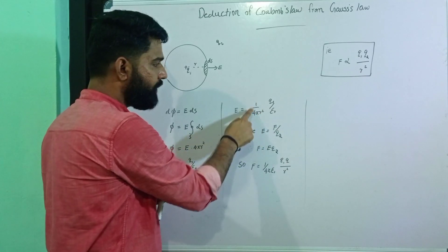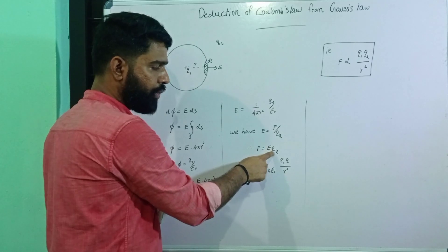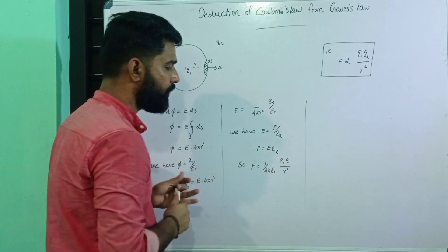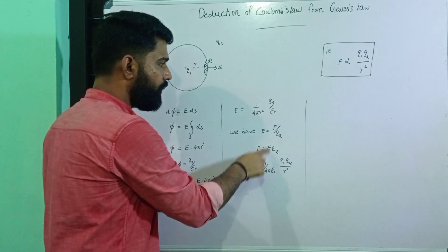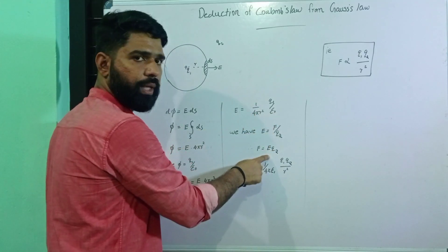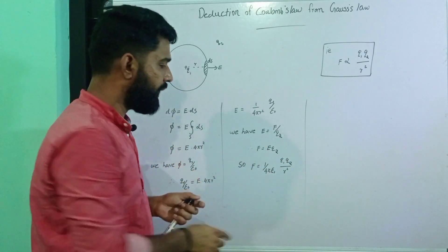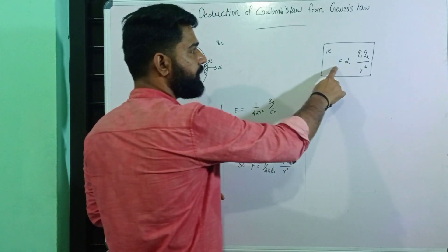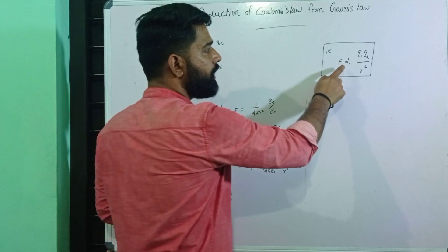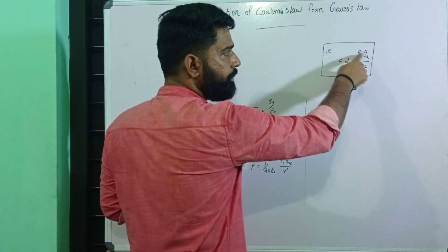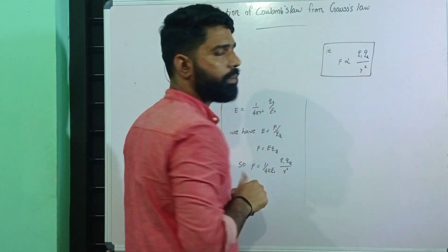So substituting, we get 1 over 4π epsilon-naught times q1 over r² into q2. Substituting E back, F is equal to 1 over 4π epsilon-naught times q1 q2 divided by r². This means that F is directly proportional to q1 and q2 divided by r² — the force is directly proportional to the product of the charges and inversely proportional to the square of the distance between the charges.